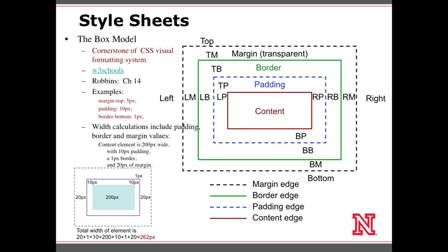One important thing to remember about padding, border, and margin is that whenever you have a piece of content with a specific width, the width of your padding, border, and margin is also calculated into the width of that content element. For instance, a content element that is 200 pixels wide, plus 10 pixels of padding left and right, plus 1 pixel border left and right, plus 20 pixels of margin left and right, adds up to a total of 262 pixels — so that element is really 262 pixels, not 200.